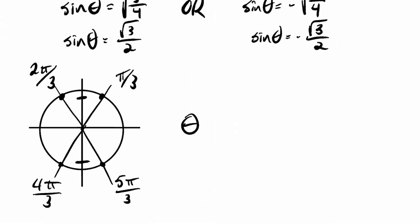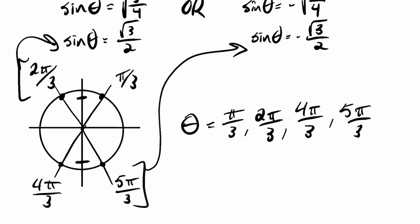Okay, so there are my solutions. Theta equals pi over 3, 2 pi over 3, 4 pi over 3, and then 5 pi over 3. With these two values, 2 pi over 3 and pi over 3, corresponding to that equation, and these two values, 4 pi over 3 and 5 pi over 3, corresponding to that equation. But there are four solutions to that equation.